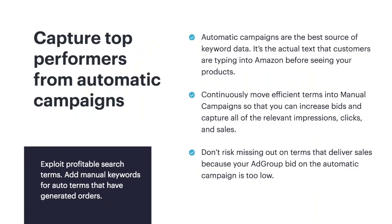We've talked a lot about the explore and exploit strategy, and now let's get into why that's so important. When you have an automatic and manual campaign set up that are exactly the same, the advantage is you're able to see which search terms work well on the automatic side and move them over as manual keywords. By taking those efficient terms, you can bid on them individually. You may be willing to spend more on a specific term if you know it converts well, and if something generates some sales but not at the rate you'd like, you can move it to manual and set a lower bid.